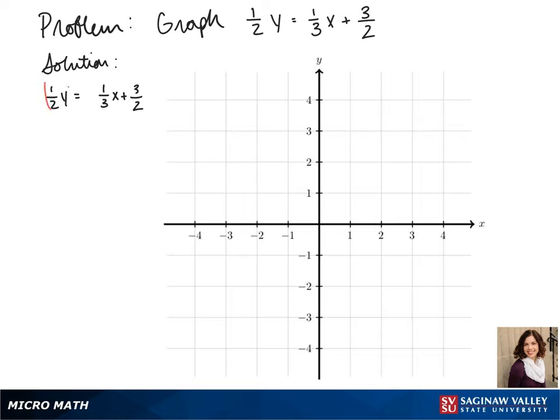So first we have to get our y by itself, so we multiply everything by 2. We don't want to multiply by a common denominator because all we're trying to do is get y by itself.